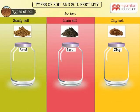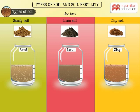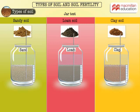The third test is the jam jar test. We take three clean and dry 500 ml jam jars with tight-fitting lids and label each of them. We paste a paper strip along the length of the bottles and mark 10 equal divisions on the strips using a scale. We then add the three different soil samples to approximately the one-third mark, fill the bottles almost all the way up with water, and give them a vigorous stirring with a long stick.